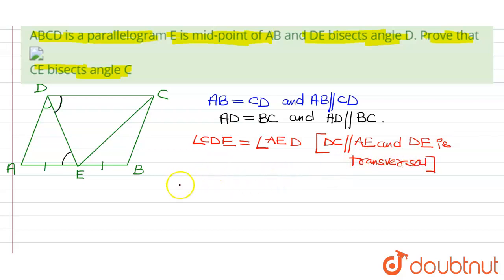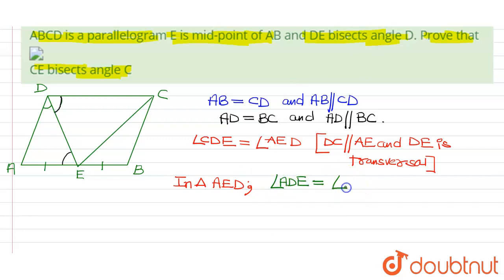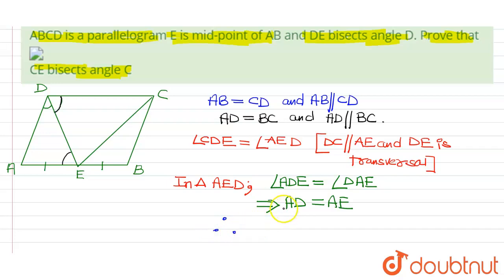Now in triangle AED, we have angle AED is equal to angle DAE. So that implies AD is equal to AE. Therefore AD is equal to BC, and AE is equal to BE since E is the midpoint of AB.